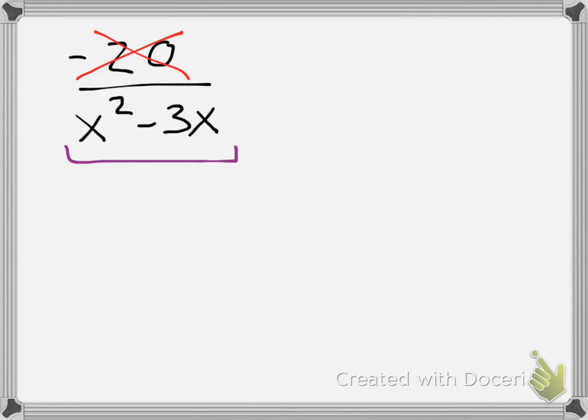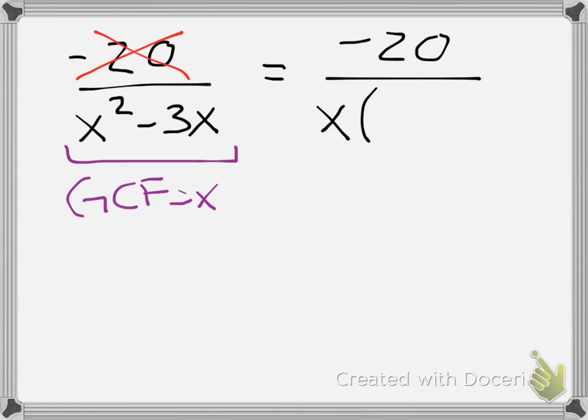So I need to factor this guy right here. I'm going to look at it, and I need to find the first thing I always want to look for, I know, is my GCF. x squared minus 3x, the GCF is equal to x. So that's the first thing I'm going to do, is I'm going to rewrite this in factored form. I'm going to go negative 20, which I don't really care about right now. But I know when I write it in factored form, if I take that GCF out, I have x multiplied by x minus 3.